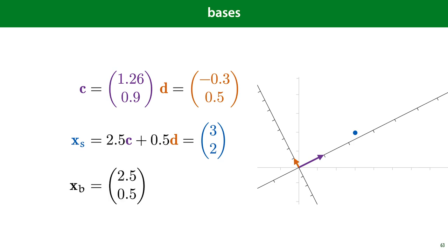So in this non-standard basis expressed by c and d, the blue point is described by the coordinates (2.5, 0.5). In the standard basis from the previous slide, that same point is described by the coordinates (3, 2).